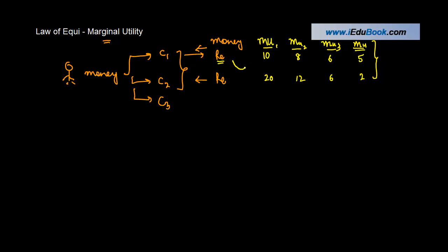As you keep on spending an additional rupee from here to here, second rupee here, third rupee here, fourth rupee here, similarly 1, 2, 3, 4. Each one reflects the marginal utility that you get as you spend one rupee extra on each of these commodities.